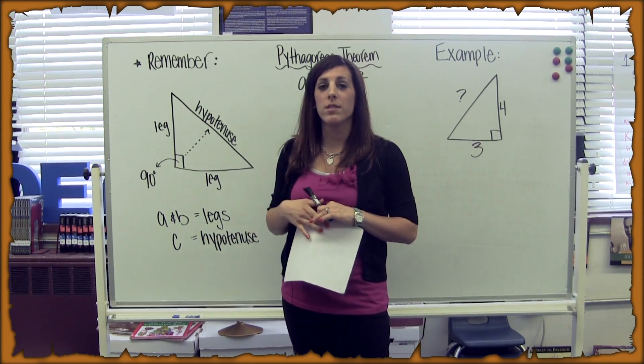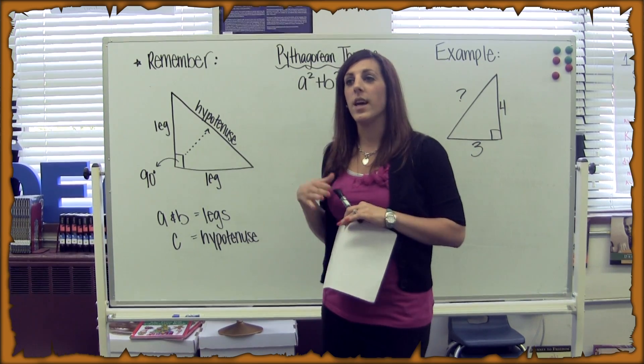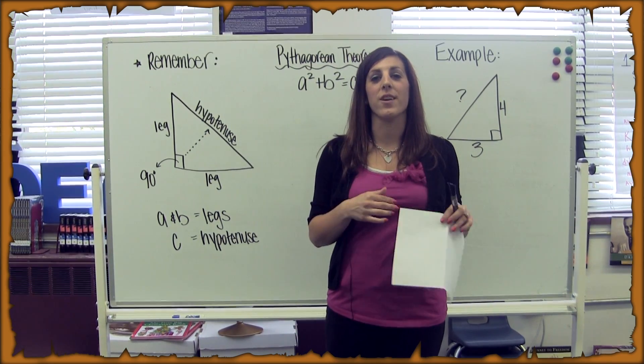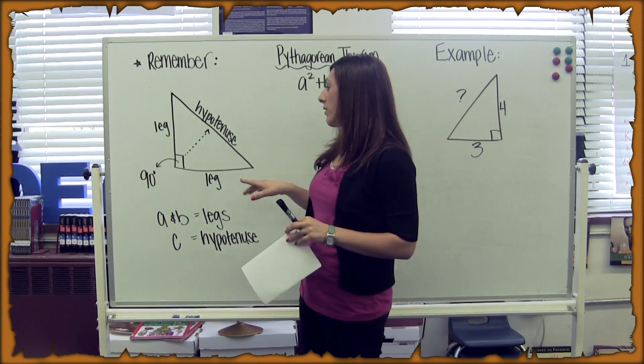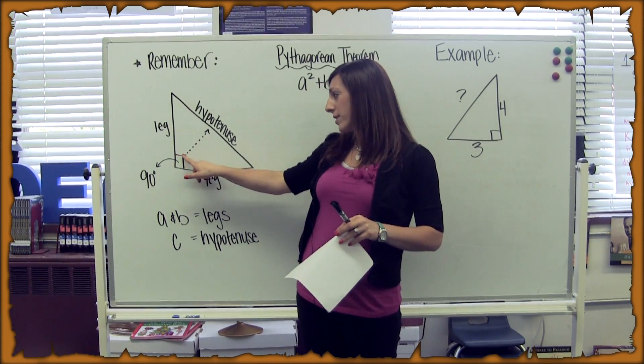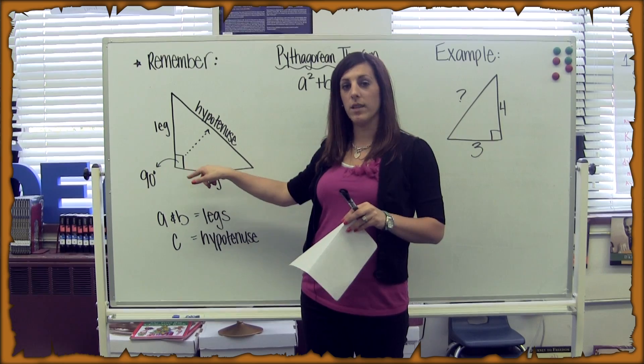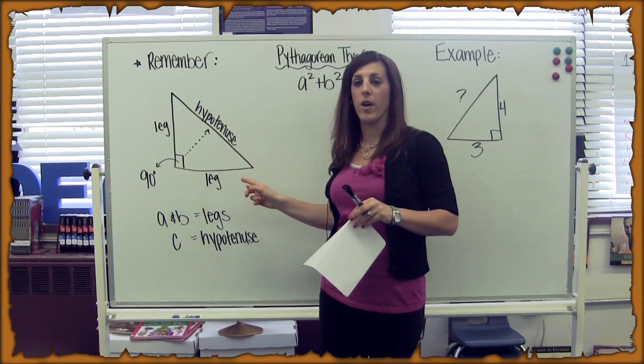Remember that the Pythagorean Theorem only is useful for right triangles, not isosceles or scalene, only right triangles. And we know it's a right triangle because it has a 90 degree angle symbol in it. This tells us that it is in fact a right triangle.